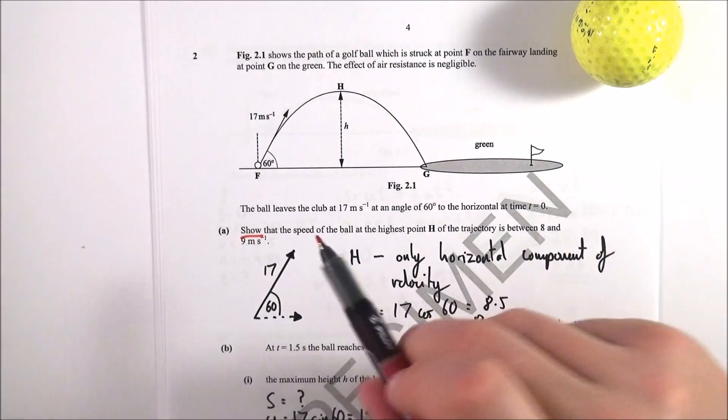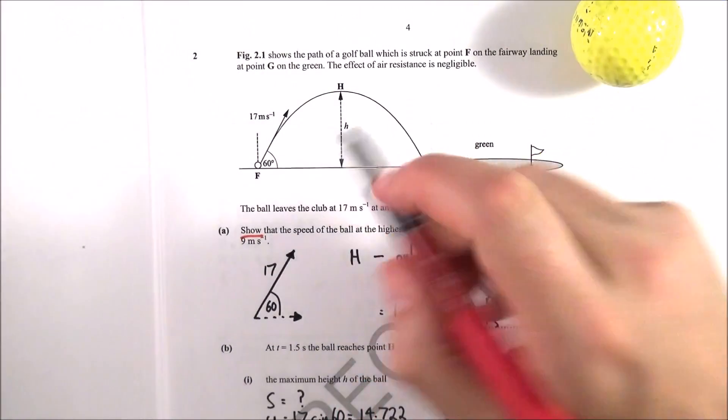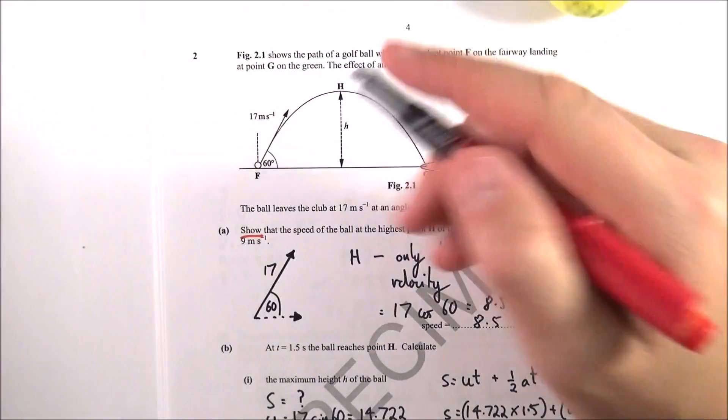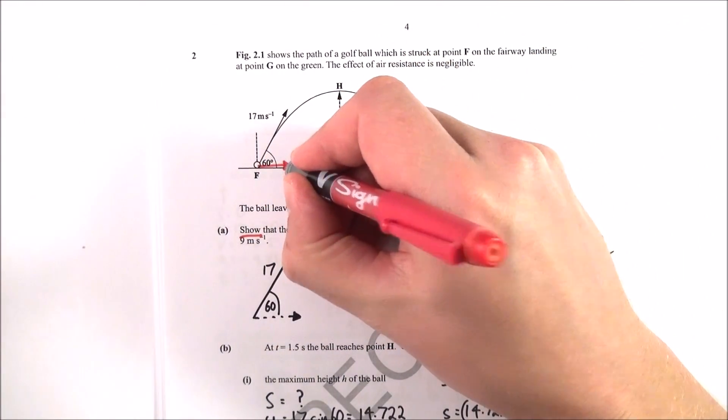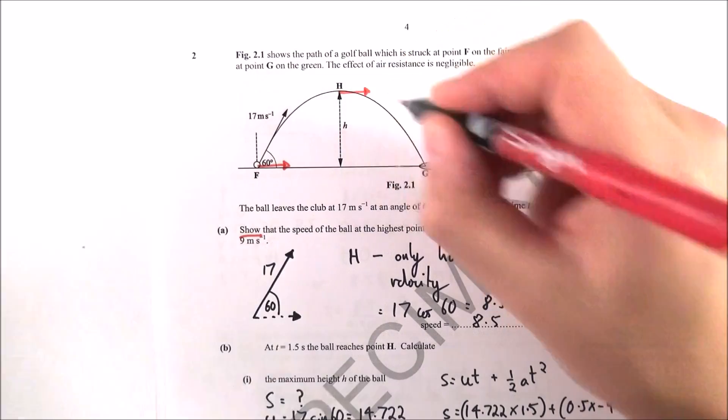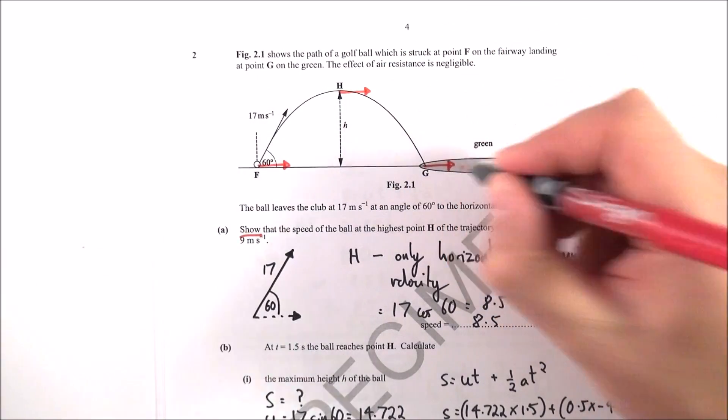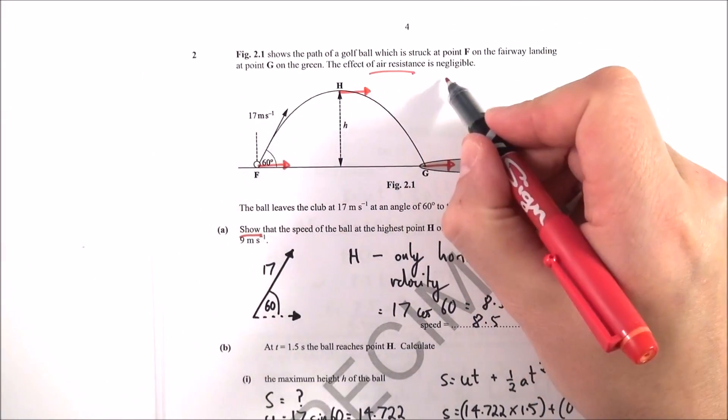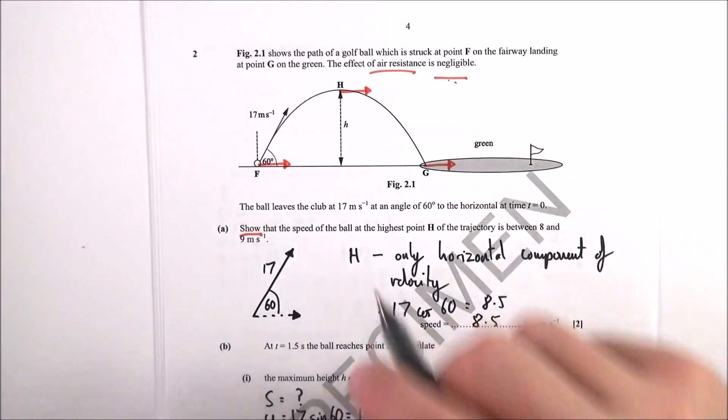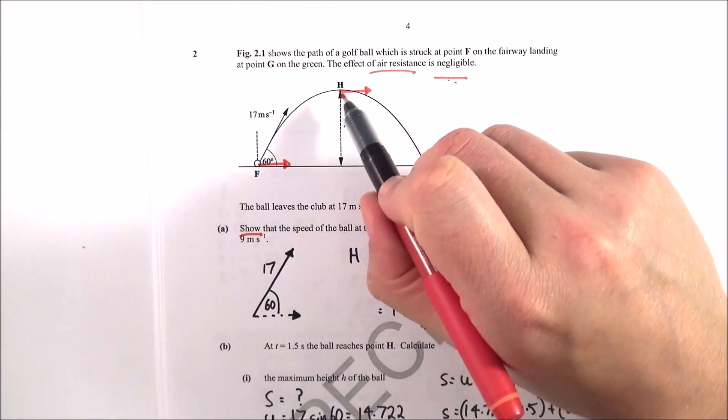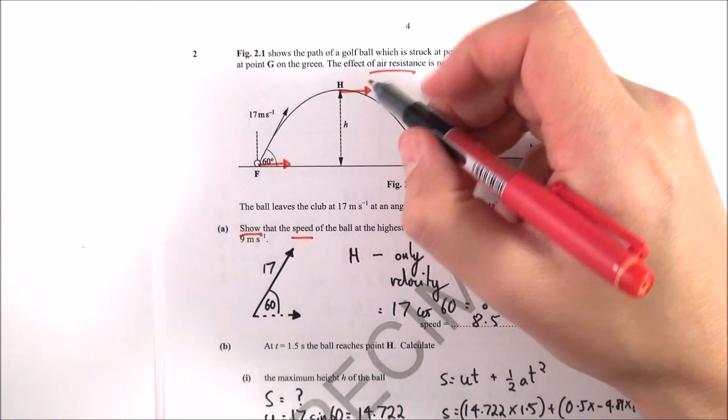What we want to know is the speed of the ball at the highest point H. What do we know about it? Well, basically the horizontal velocity of this ball is going to stay constant because there's no air resistance, which is what it says up here in the question.